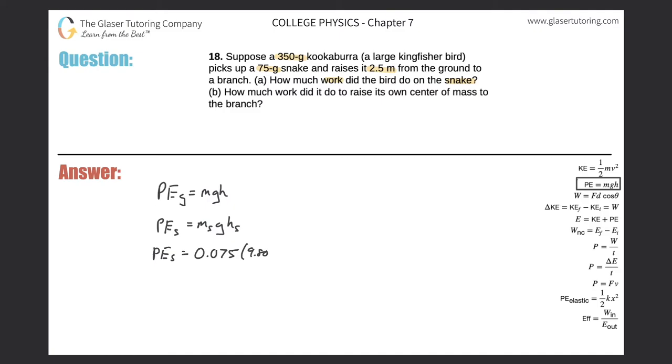g is 9.80. And the height here, it rose 2.5 meters, right? The bird lifted at 2.5 meters. So now the potential energy of the snake has changed by 0.075 times 9.8 times 2.5.